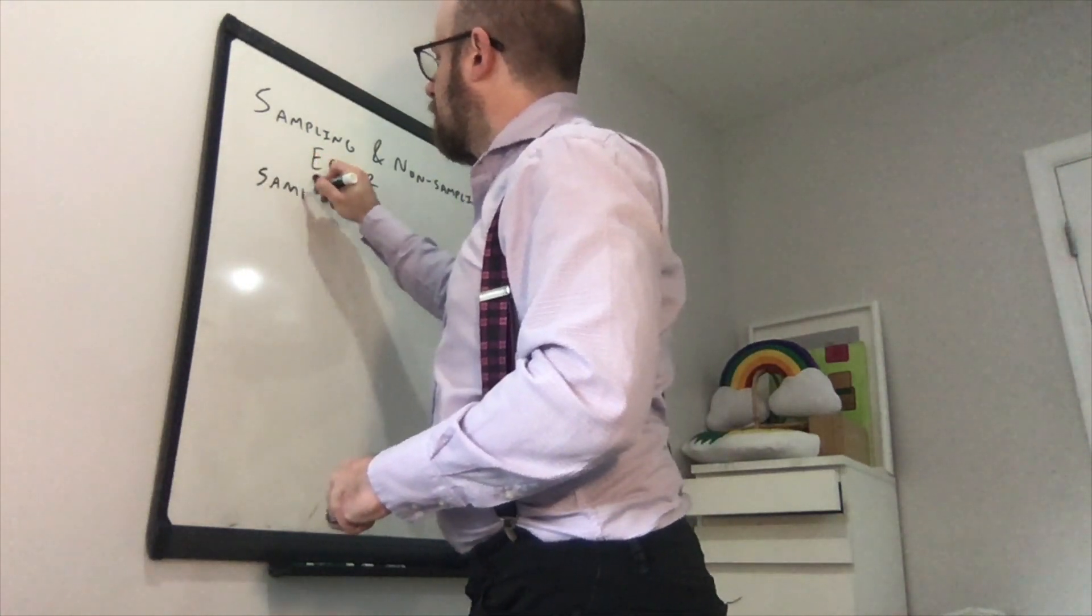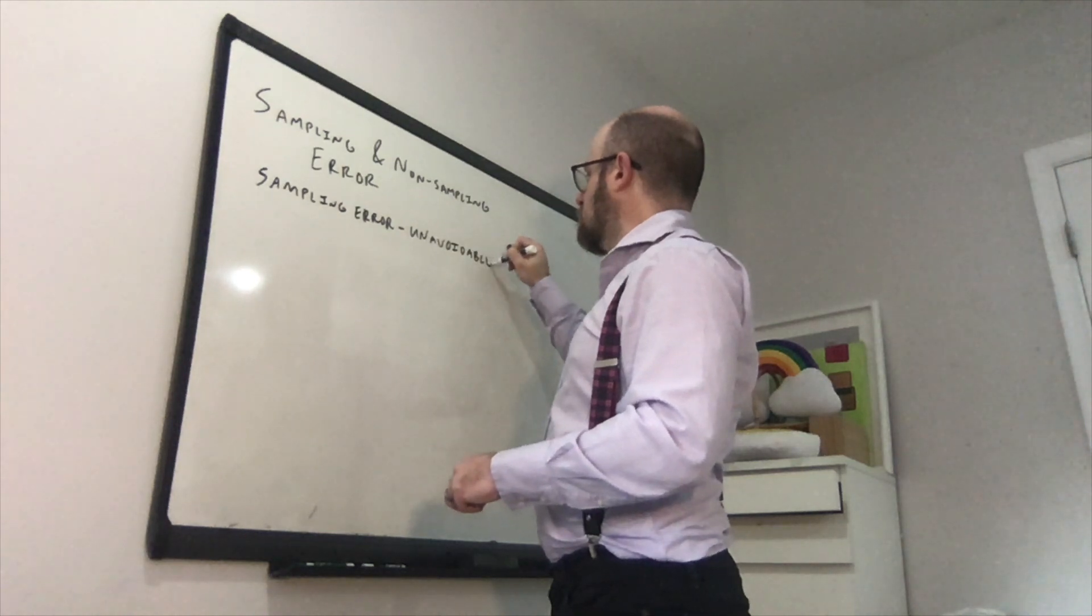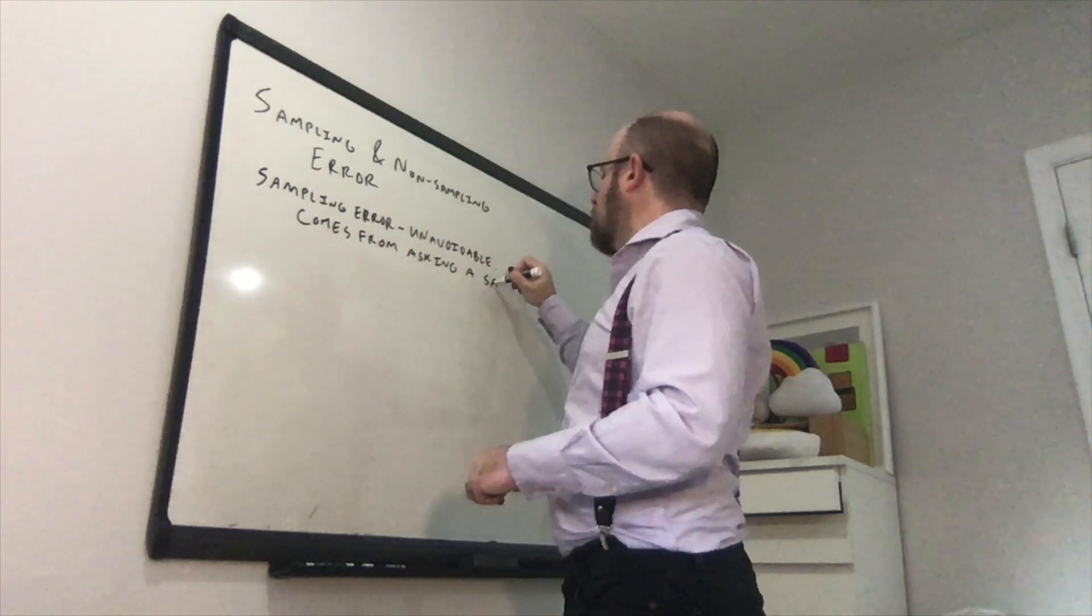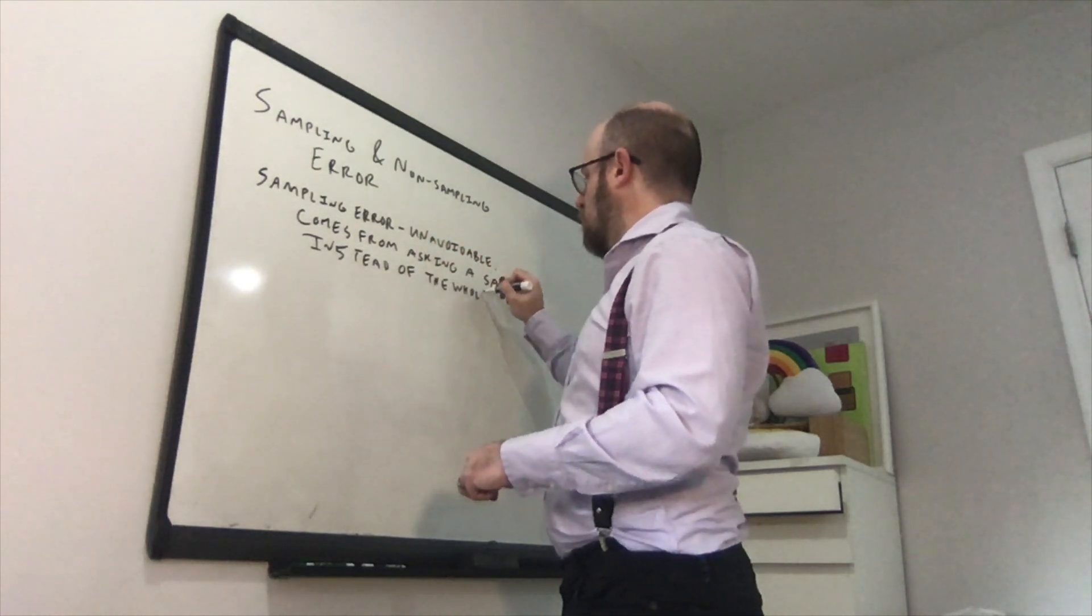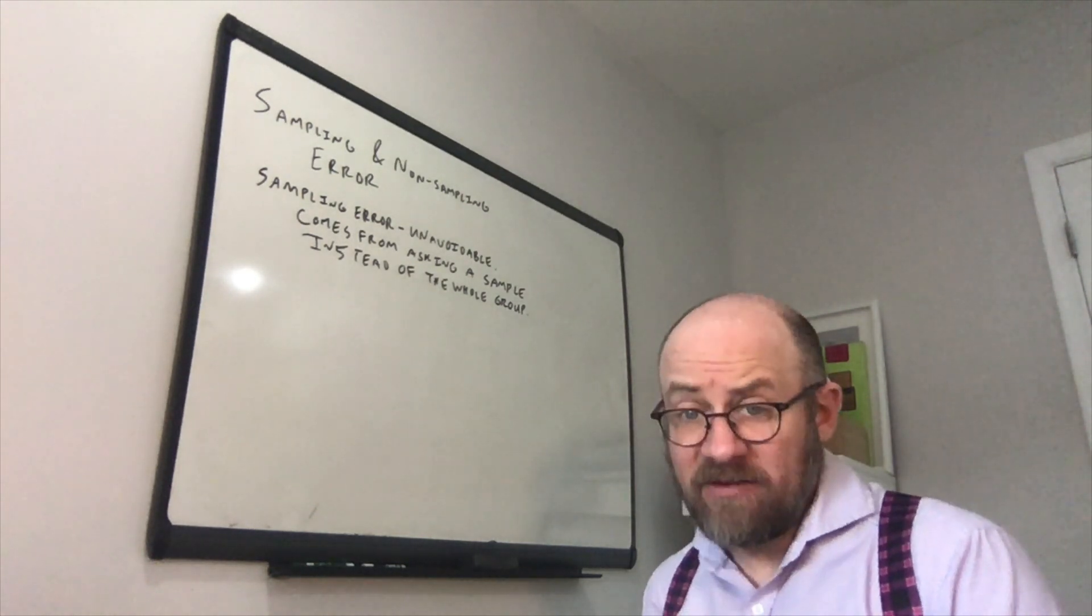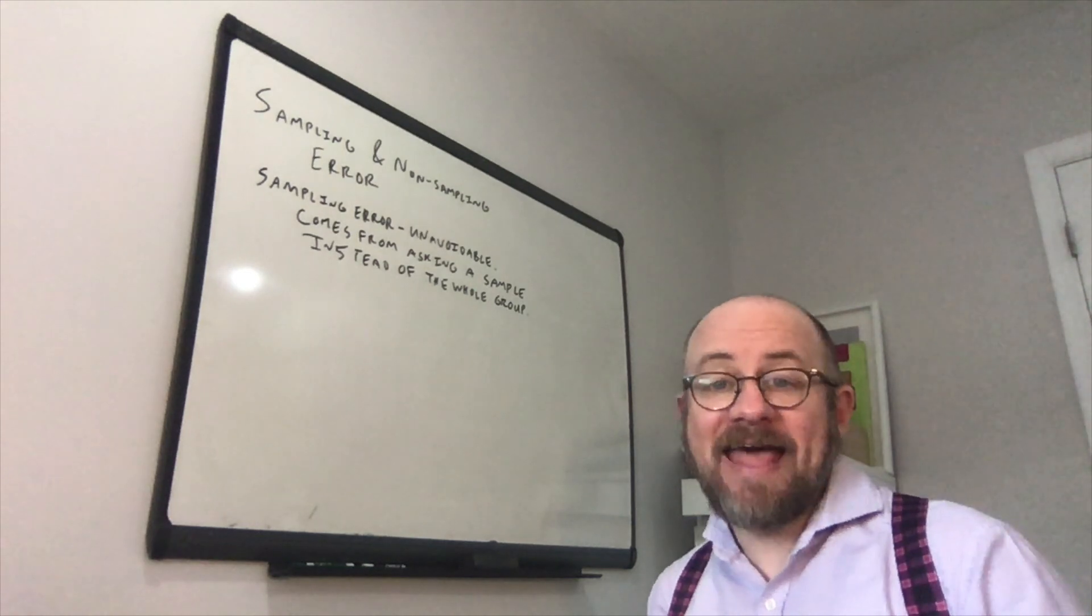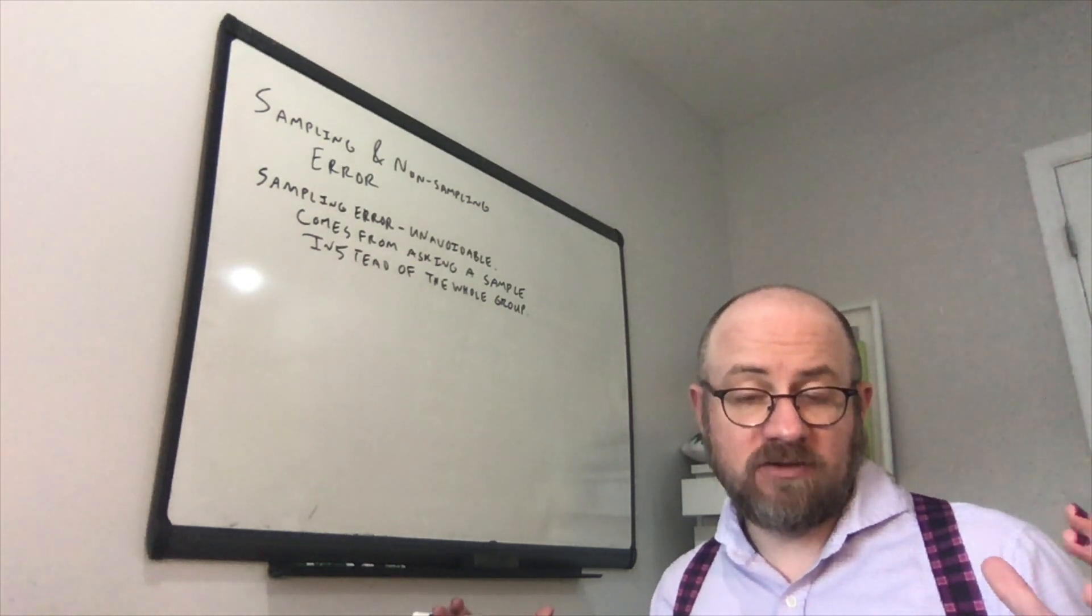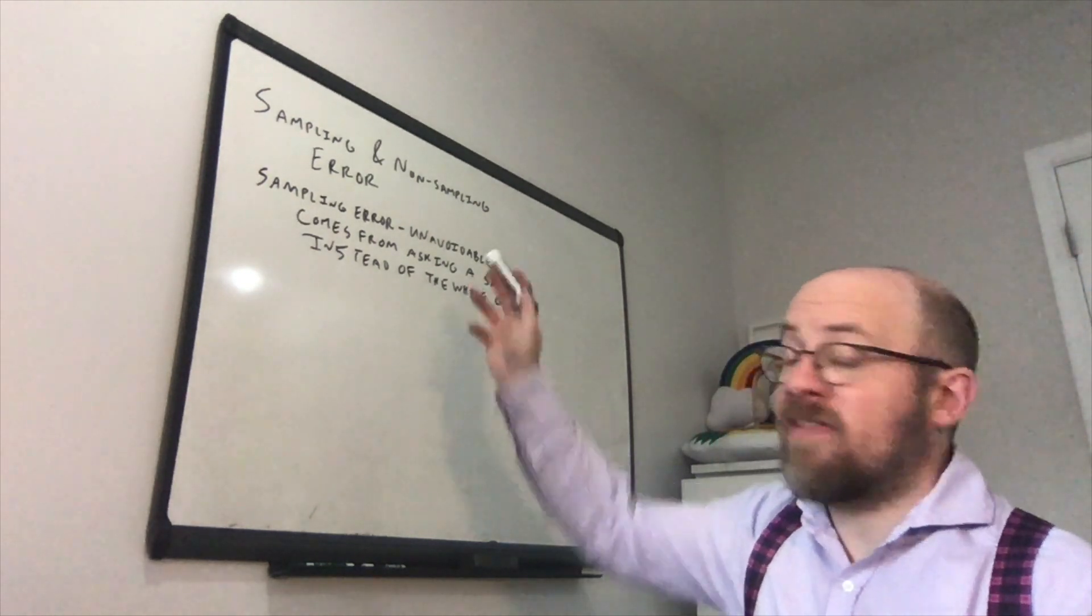So sampling error is unavoidable. And it comes from asking a sample instead of the whole group. So if you wanted to know something about what Stevenson students thought, you would have to ask every single Stevenson student if you wanted to find out the exact percentage of students who, for example, wanted pass-fail grading. But instead, since we take a sample, we might get something close. And if we ask enough people, we'll get something that's close to what we expect, close to the right answer, but we're not necessarily going to get exactly the right answer. And so even if we do everything right, we're always going to have some error. That's called sampling error.